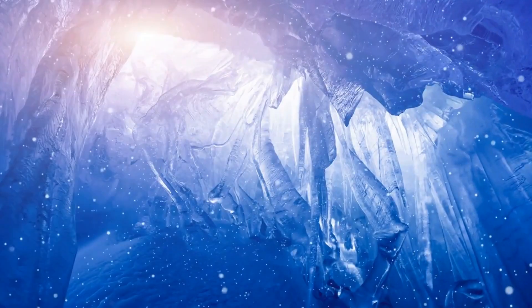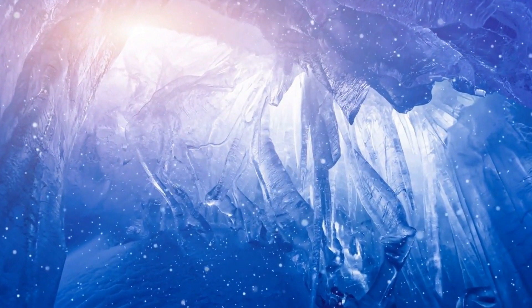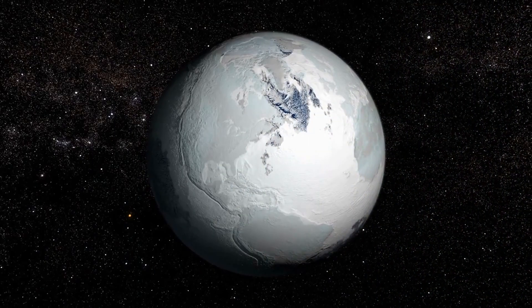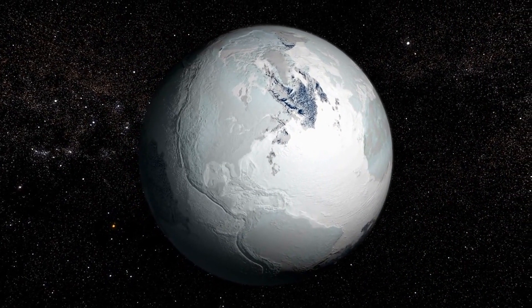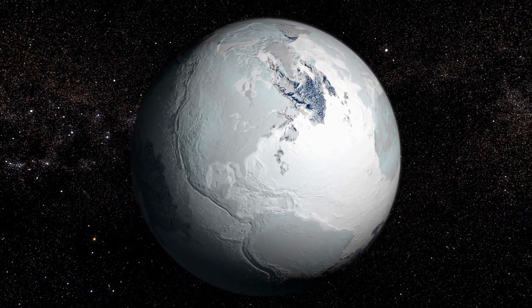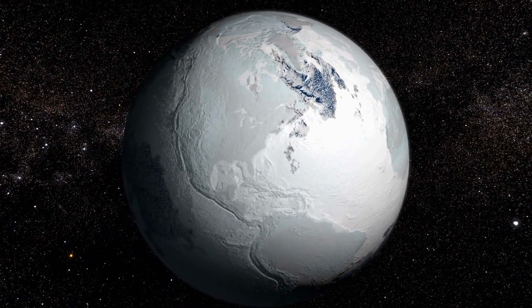There is a wall of ice surrounding the Earth, preventing us from falling off. This argument is not supported by scientific evidence. Such a wall would be thousands of miles long and extremely difficult to conceal, yet no evidence of it has ever been found. Additionally, the laws of physics dictate that such a wall would collapse under its own weight and melt due to the Earth's heat.